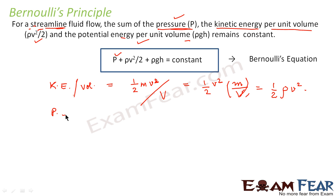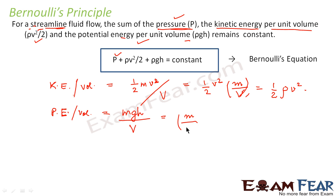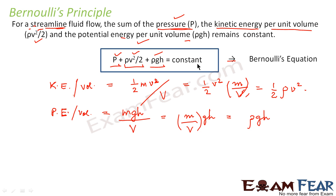Similarly, the third term is potential energy per unit volume. That is MgH divided by capital V, which gives M by capital V into g into H. Mass per unit volume is nothing but density, that is rho. So it comes out to be rho g H. We have now arrived at Bernoulli's equation, which says that the sum of pressure, kinetic energy per unit volume and potential energy per unit volume is constant.